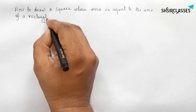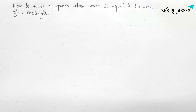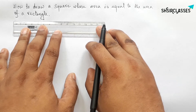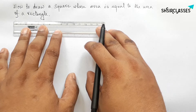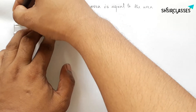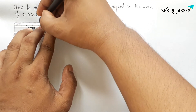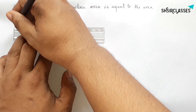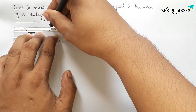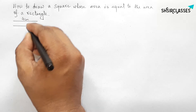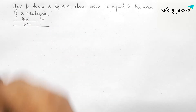First of all, let us consider the breadth and length of the rectangle. Here we're taking breadth equal to 4 centimeters and length equal to 6 centimeters. You can choose another length and breadth of your choice, but here we're taking 4 centimeters as breadth and 6 centimeters as length.